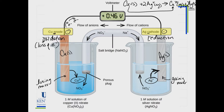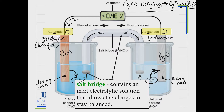Another very important piece — without which the reaction will not take place — is the salt bridge. The salt bridge must contain an inert electrolyte, meaning it cannot get involved in the reaction. It's necessary because we have to keep the charges balanced on either side.